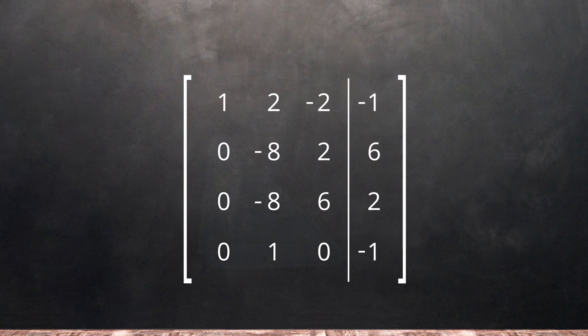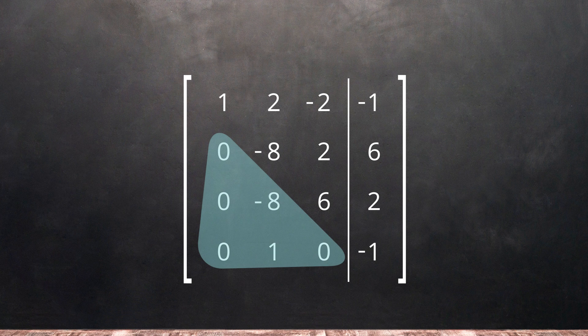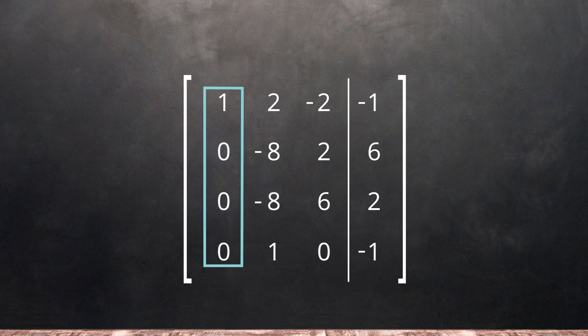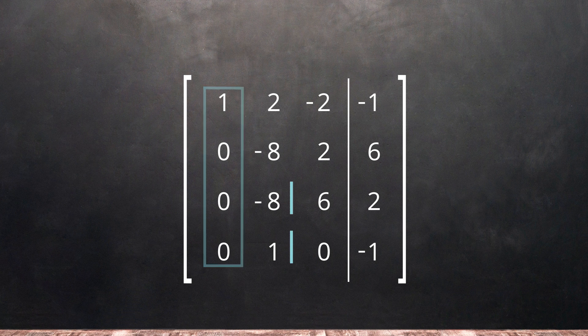Remember that our goal is to reduce the lower left triangle to be all 0s. Now that our first column is how we want it, we can focus on creating our 0s in the second column. To do this, we'll use the second row as our pivot.